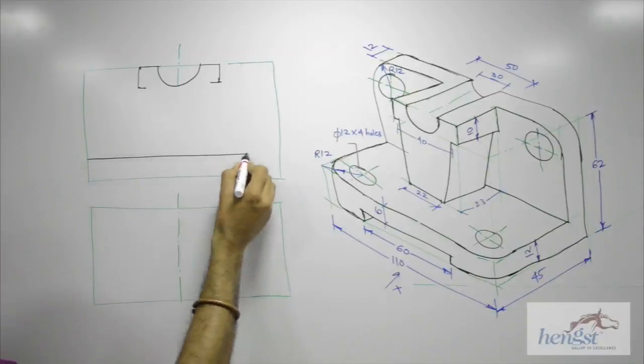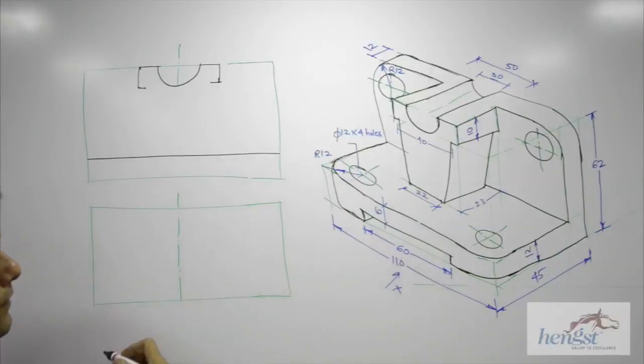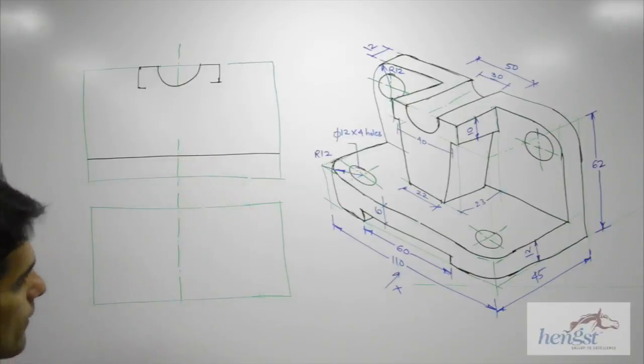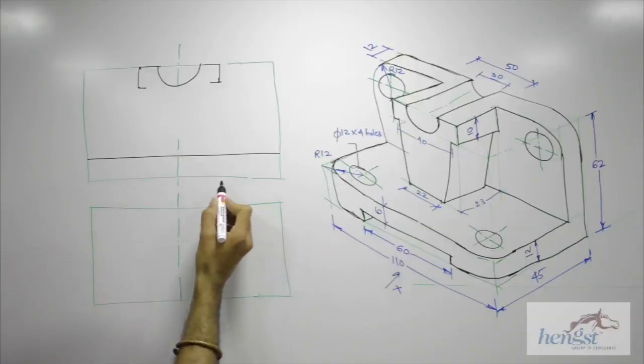I can draw one horizontal line for this. Then they have 60. So we will draw center line, 60. So we take 30 on both sides.